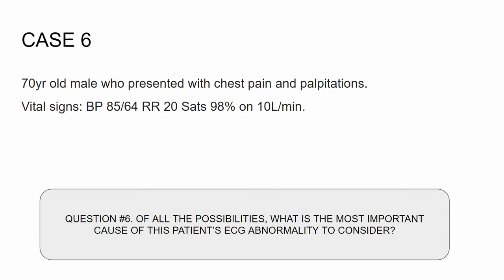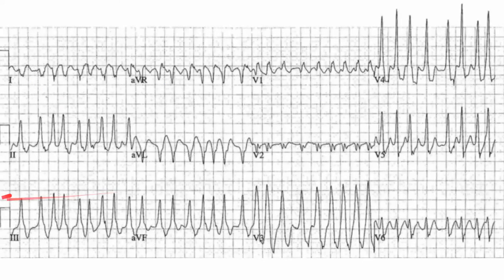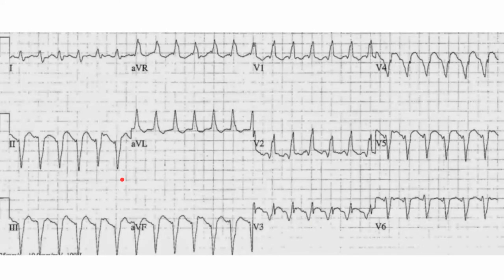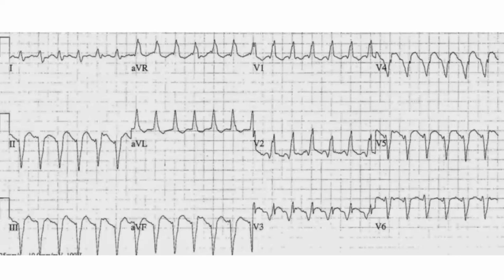Case number six: chest pain and palpitations. Of all the possibilities, what's the most important cause to consider? As opposed to the previous one which appears irregular, let's look at this one — pretty regular. Even though they don't give us a rhythm strip, we use what we've got. It looks pretty regular. And it's wide. Look over here — it's wide. So this is regular and coming from the ventricle. When it's wide like this, the thing we've got to consider is VTAC. It said what's the most important cause — if you're on call and you get this, you think about VTAC until somebody else proves it otherwise. You've got to take the worst-case scenario.